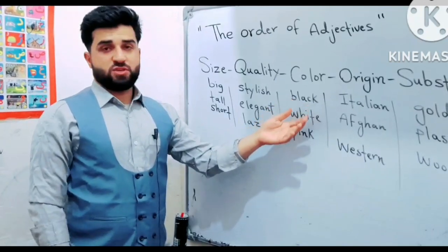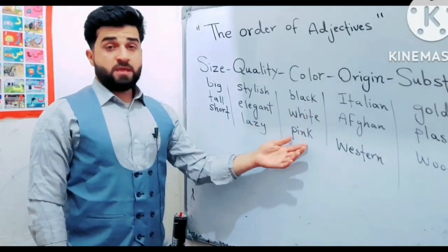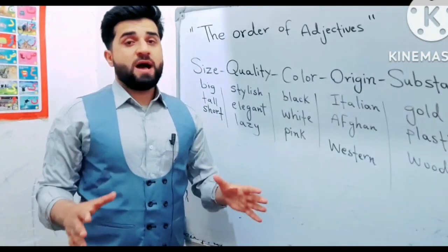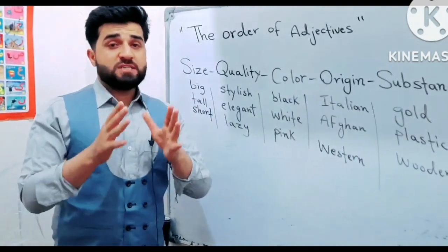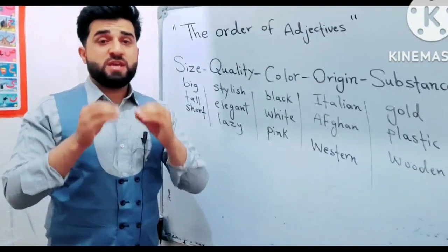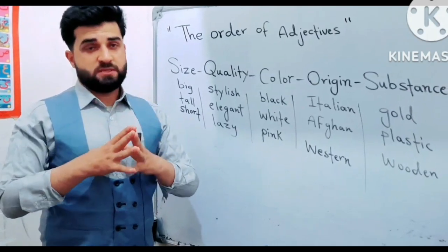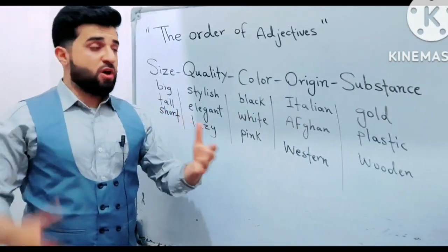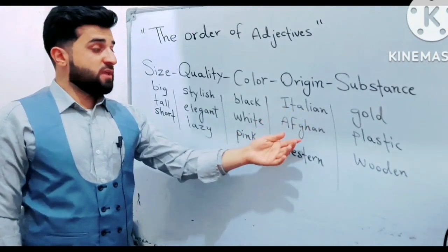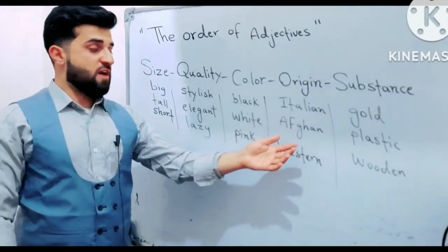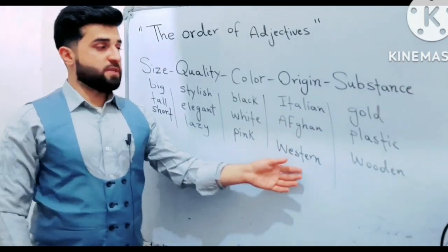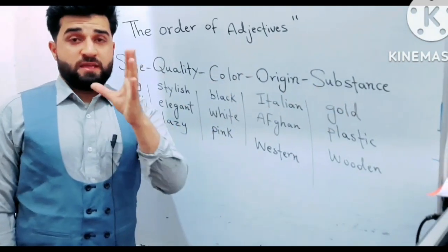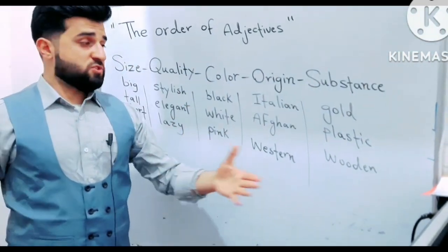Black, white, pink. Then origin — for example: Italian, African, Western. Then substance — for example: white...